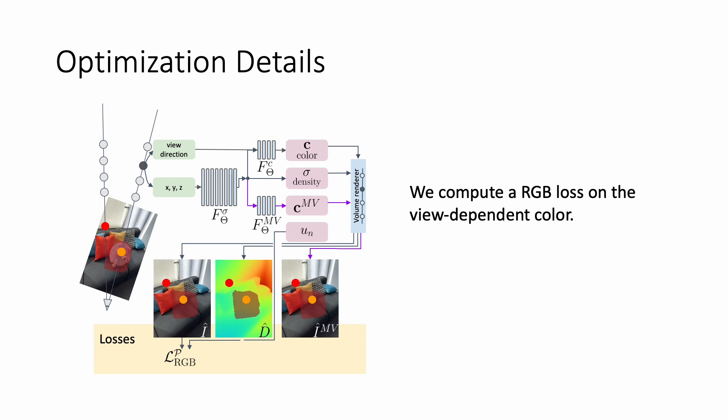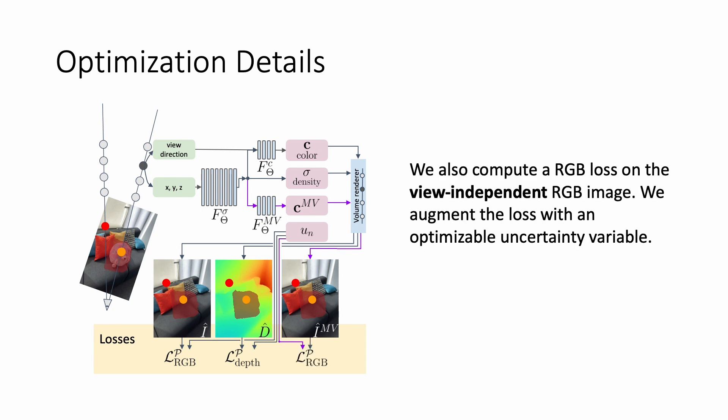We also compute the depth loss on the depth map. Similar to the RGB loss, we weight the loss with the uncertainty variable inside the mask. Finally, we also compute the loss on the multi-view color head that is weighted with the uncertainty head.